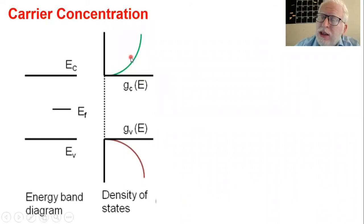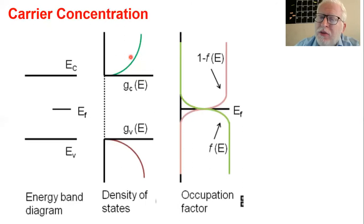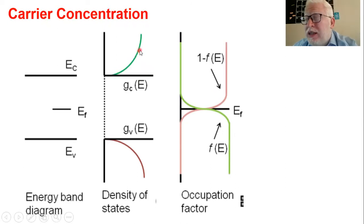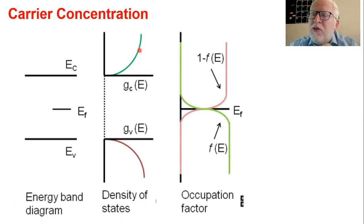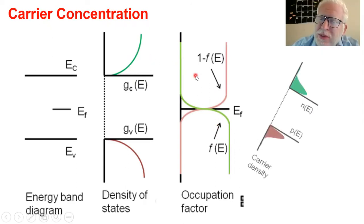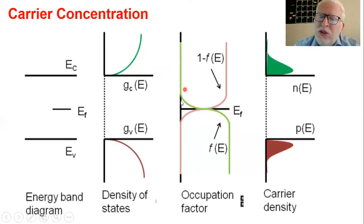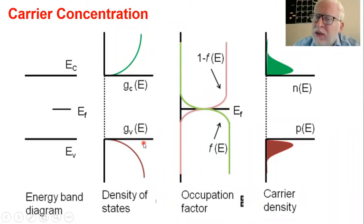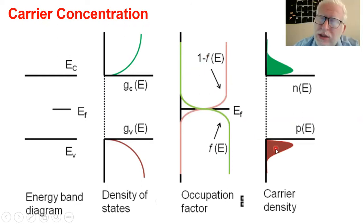This is described by two functions: the density of states function and the Fermi-Dirac distribution. For electrons, we multiply the density of states in the conduction band by F(E), which is the probability to find an electron. Similarly for holes, we multiply the density of states for holes in the valence band by (1 minus the probability to find an electron), which is the probability to find a hole.